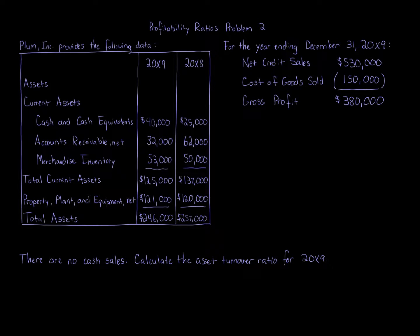It's a table that presents information for 20x9 and 20x8. Current assets: cash and cash equivalents 20x9 $40,000, 20x8 $25,000. Accounts receivable net 20x9 $32,000, 20x8 $62,000. Merchandise inventory 20x9 $53,000, 20x8 $50,000. Total current assets 20x9 $125,000, 20x8 $137,000. Property, plant and equipment net 20x9 $121,000, 20x8 $120,000. Total assets 20x9 $246,000, 20x8 $257,000.